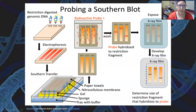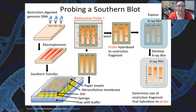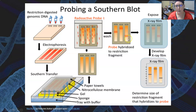Once the DNA has been transferred onto the membrane, the labeled probe is added. It anneals to its complementary base sequence, forming visible bands on the membrane. Northern blot is the same process but used for RNA. In the illustration, the sample is digested with restriction enzymes, loaded into electrophoresis gel, and fragments migrate to different locations. The pattern is transferred by capillary action to the nitrocellulose membrane, incubated with radioactive probes, and bands become visible on X-ray film.